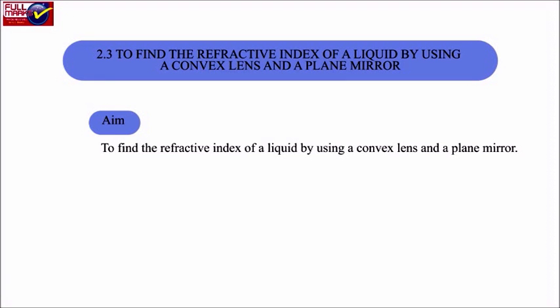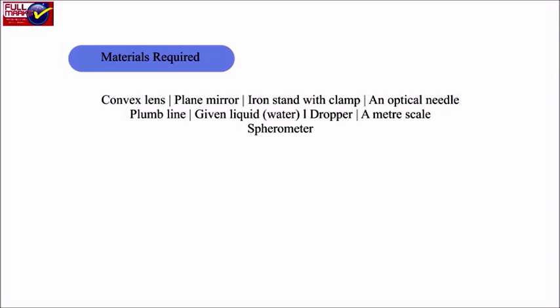2.3 Determine the refractive index of a liquid by using a convex lens and a plane mirror. Aim: Determine the refractive index of a liquid by using a convex lens and a plane mirror. Materials required: Convex lens, plane mirror, iron stand with clamp, optical needle, plumb line, given liquid, dropper, a meter scale, spirometer.